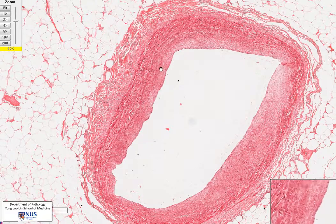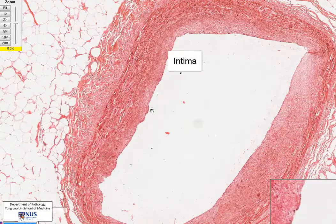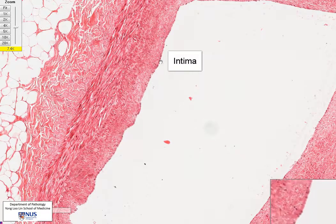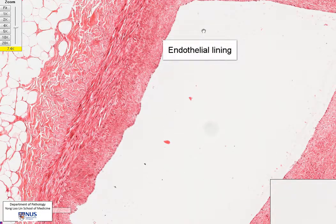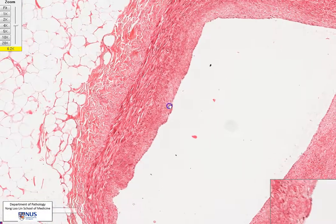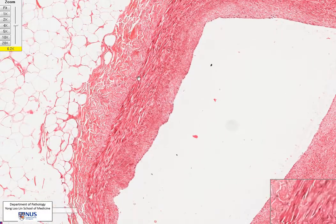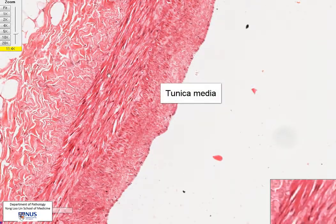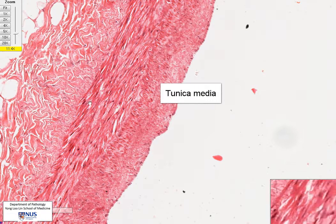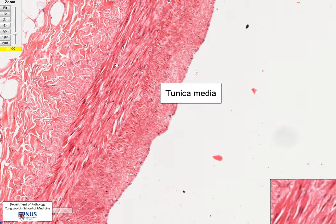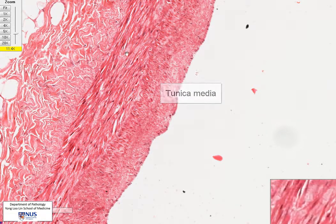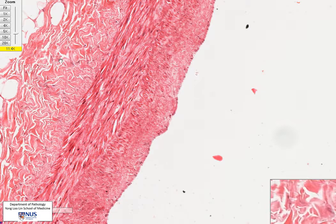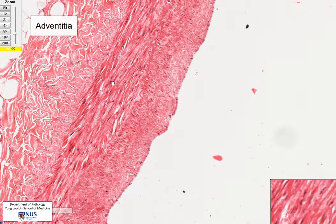The innermost layer here is called the intima, and this is lined here by a layer of endothelial cells, which is immediately present adjacent to the lumen. Just beneath the intima is the media — the tunica media — and you can see that it is composed of smooth muscle cells with central nuclei and a very spindled appearance. And then deep to that is the adventitia.